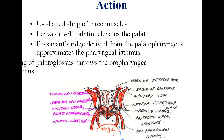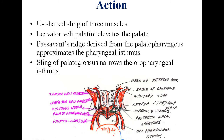Summary of muscle actions: the U-shaped sling of levator veli palatini elevates the palate. The Passavant's ridge derived from palatopharyngeus approximates the pharyngeal isthmus. The sling of palatoglossus narrows the oropharyngeal isthmus. This diagram shows the tongue, palatoglossal arch, palatopharyngeal arch, musculus uvulae, levator veli palatini, and tensor veli palatini.